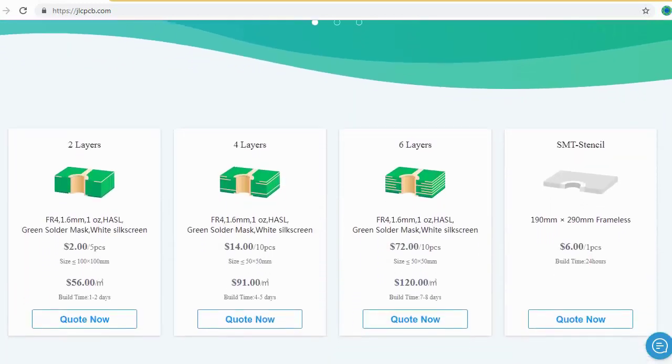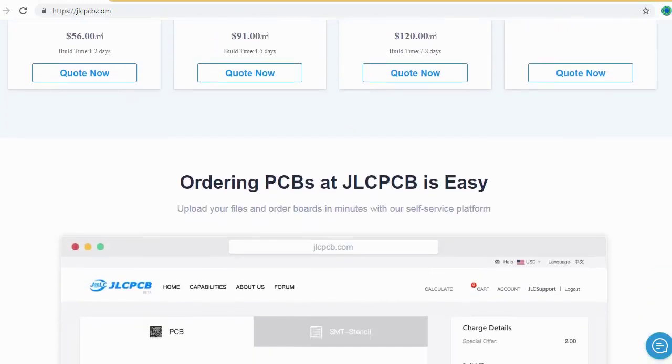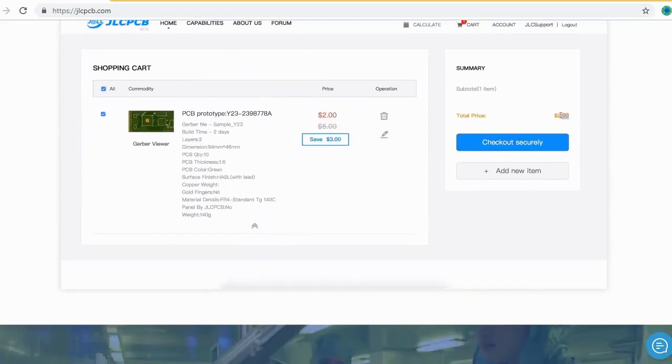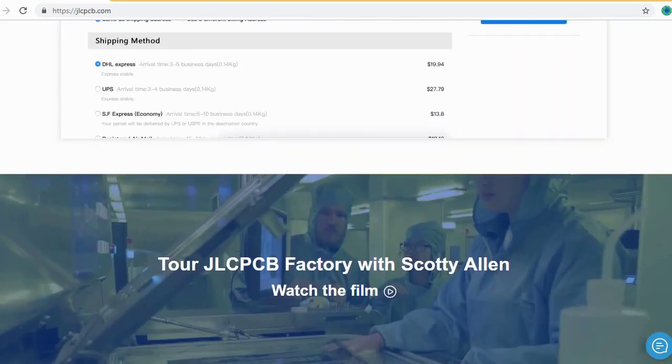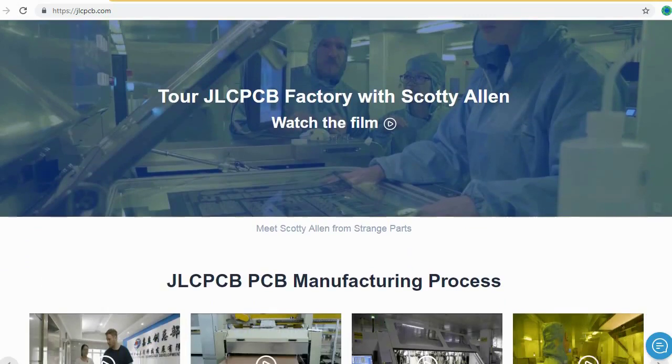JLCPCB is the largest PCB prototype enterprise in China and a high-tech manufacturer specializing in quick PCB prototyping and small batch PCB production.